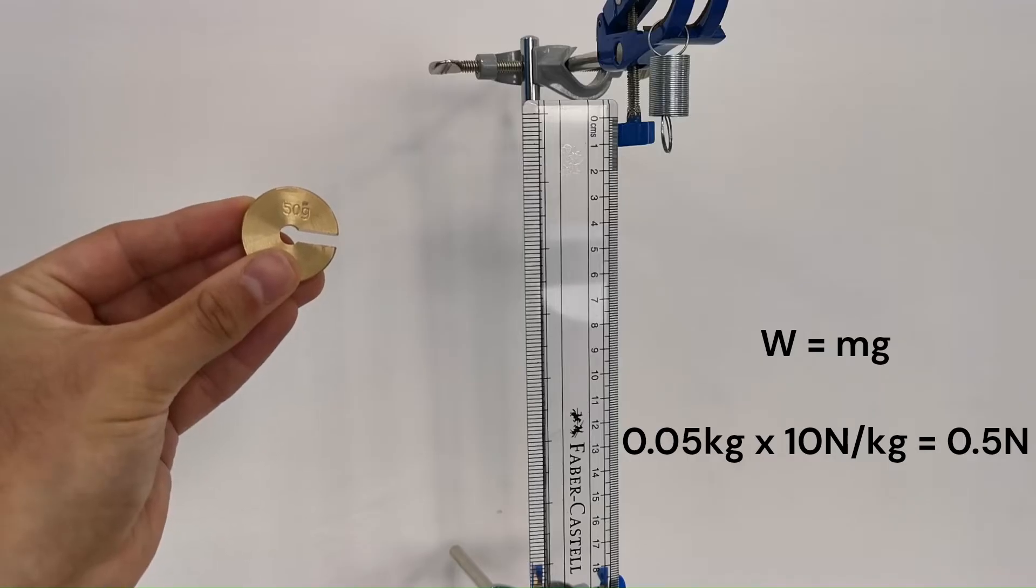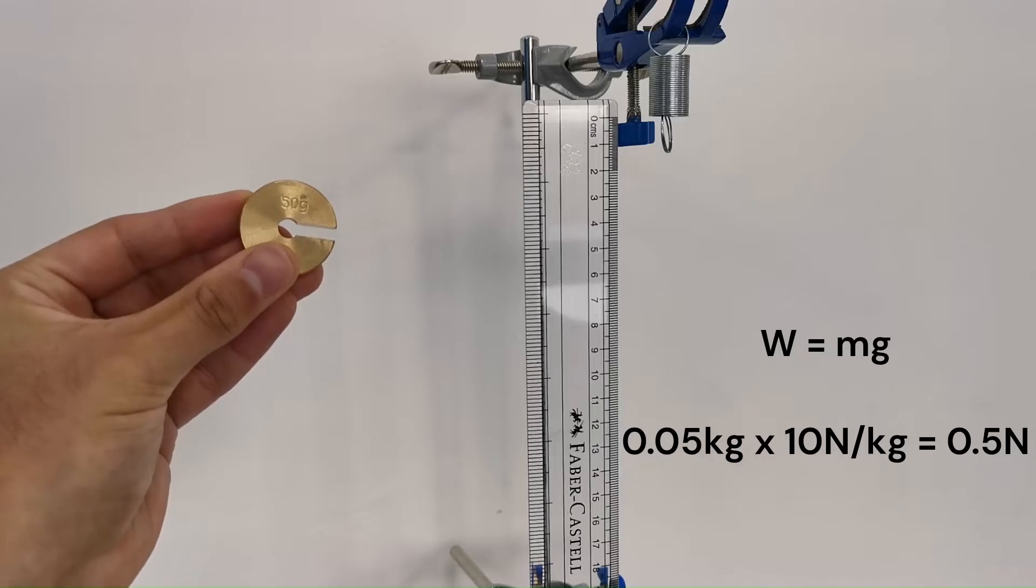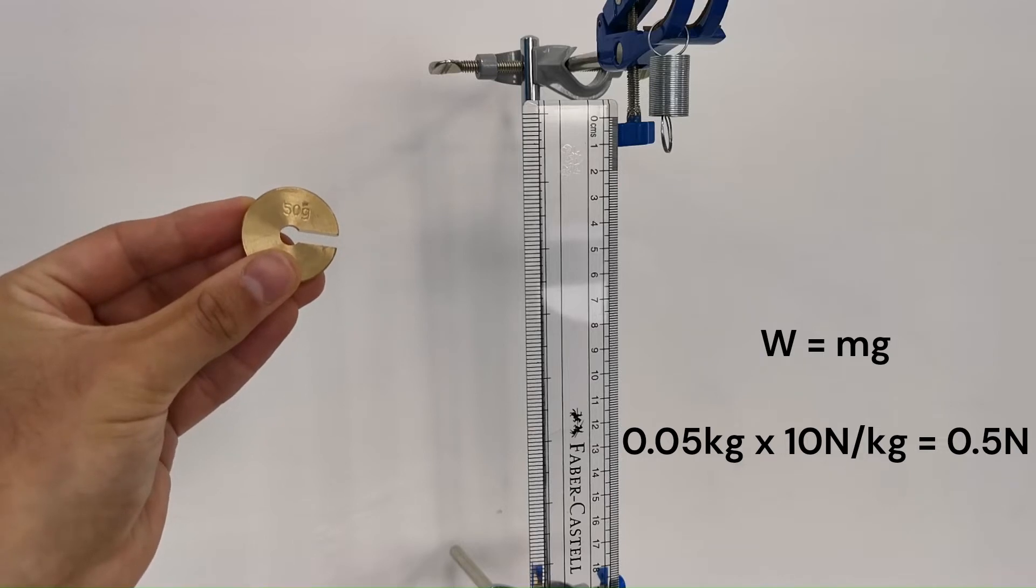The gravitational field strength is approximately 9.8 newtons per kilogram, but we will be using 10 newtons per kilogram for simplicity. When we multiply 0.05 kilograms by 10 newtons per kilogram, the weight of each mass is 0.5 newtons.